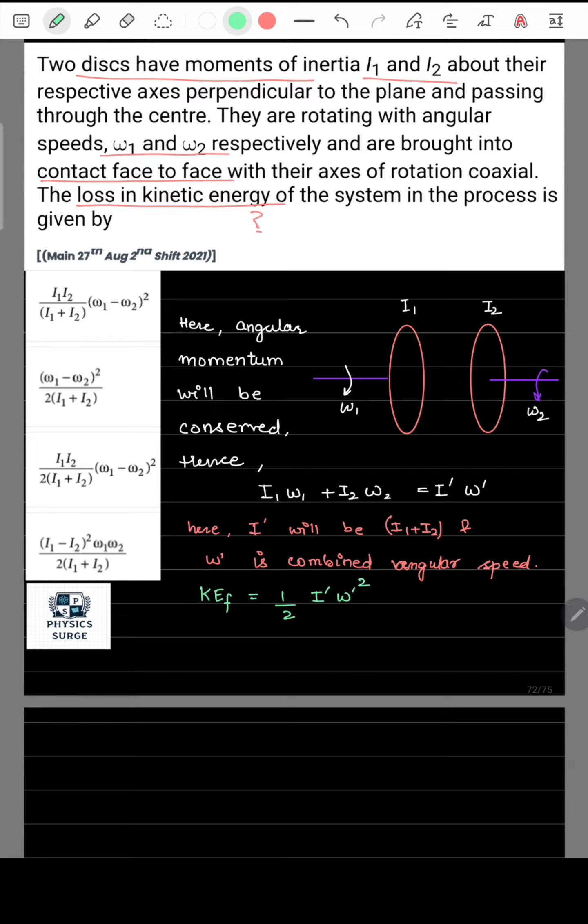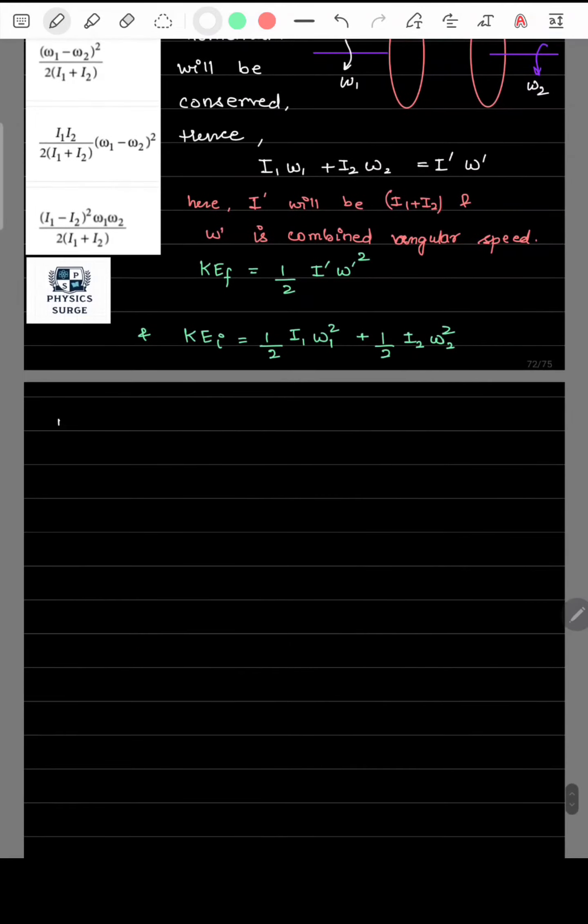Hence, kinetic energy final can be written as half i dash omega dash square and kinetic energy initial can be written as half i1 omega 1 square plus half i2 omega 2 square.